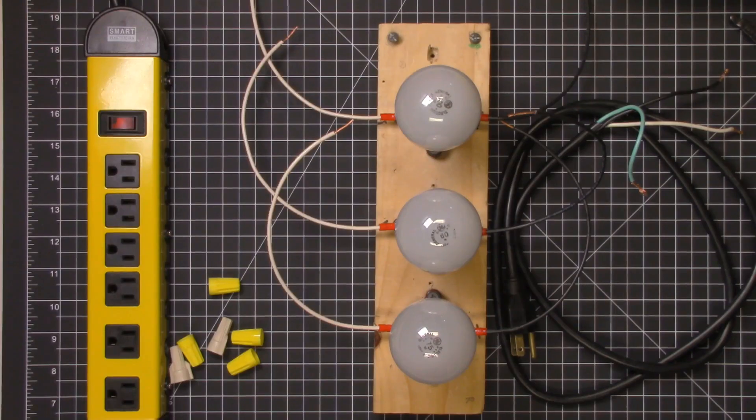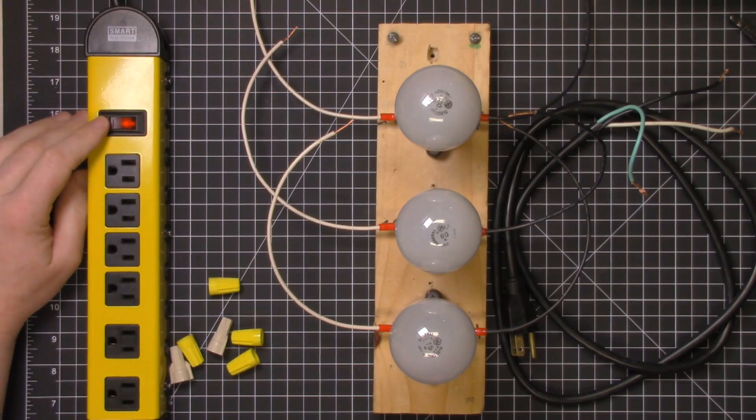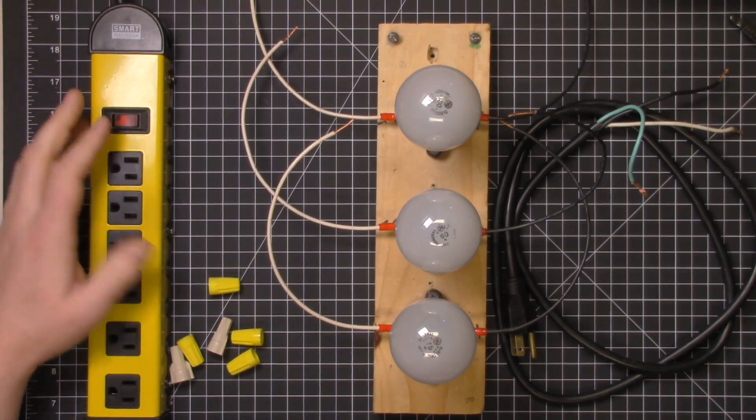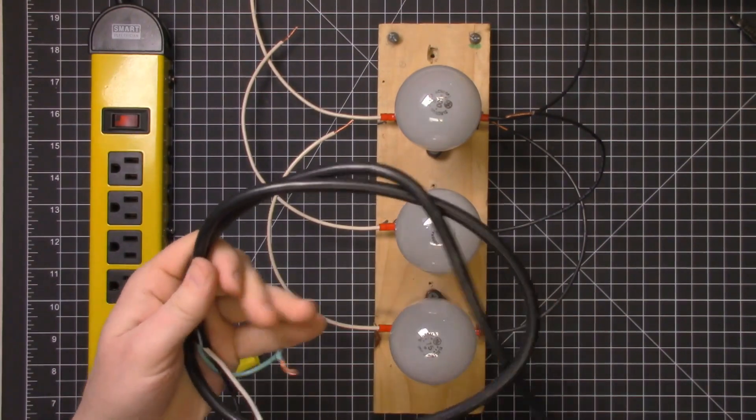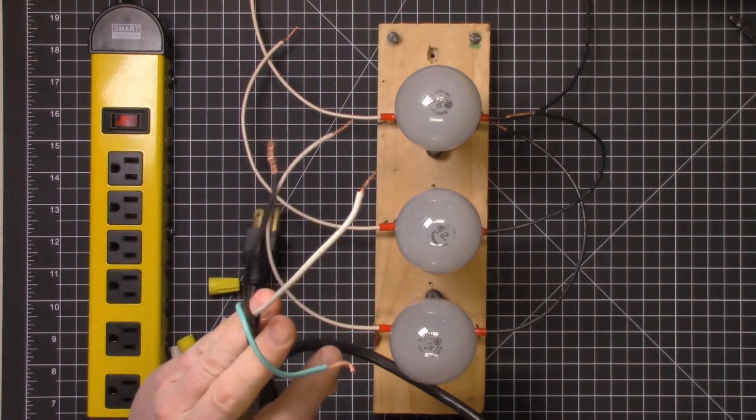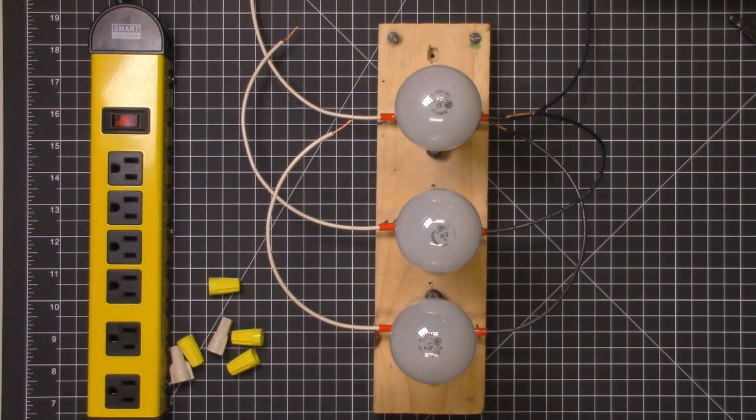So let's take a look at the equipment that I've got for this experiment. Number one, I've got a power strip over here that I can turn on and off. I have a 120 volt electrical cord that just has each individual wire exposed so we can connect some things up using wire nuts.